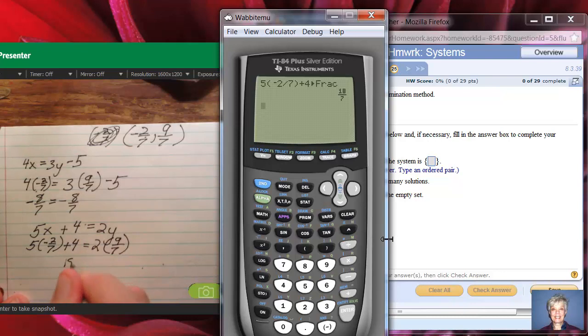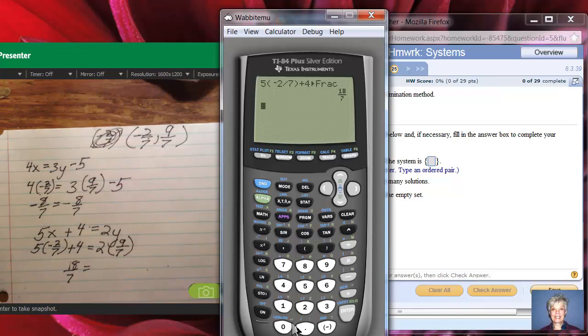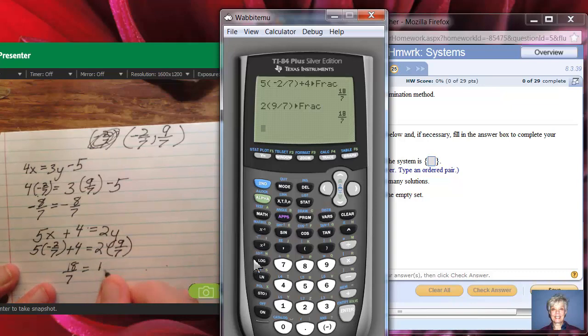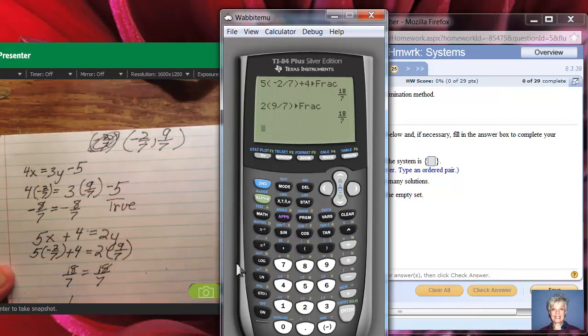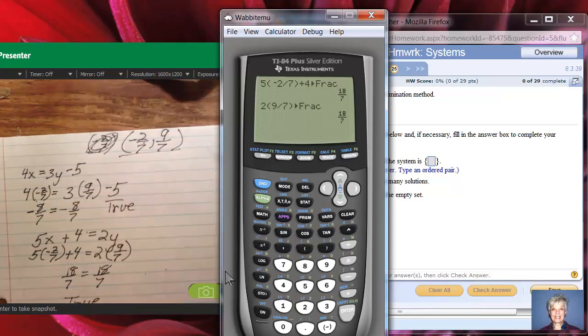And over on the right, I'll have 2, parentheses, 9/7, parentheses closed, math, enter, enter, 18/7. So both equations give me a true. That means this is our answer.